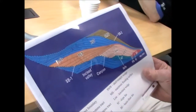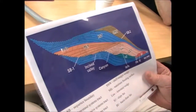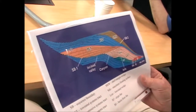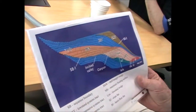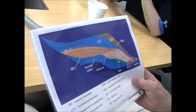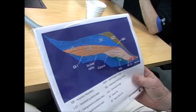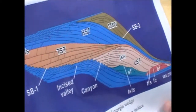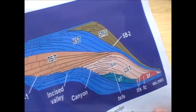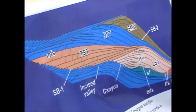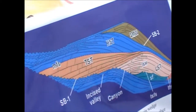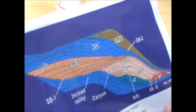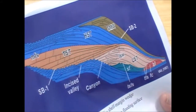But as you get into the upper part of the onlap, the units would become parallel and prograde out into the basin, and downlap onto the lower units that were pinching out. So we called that a downlap surface. We were able to identify these in wells and outcrop, and we discovered these are really condensed sections — often very rich in fossils and organic matter — a zone of very slow deposition.